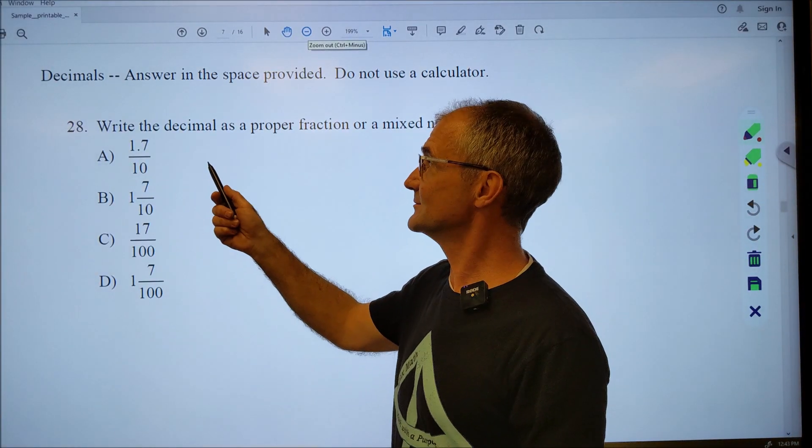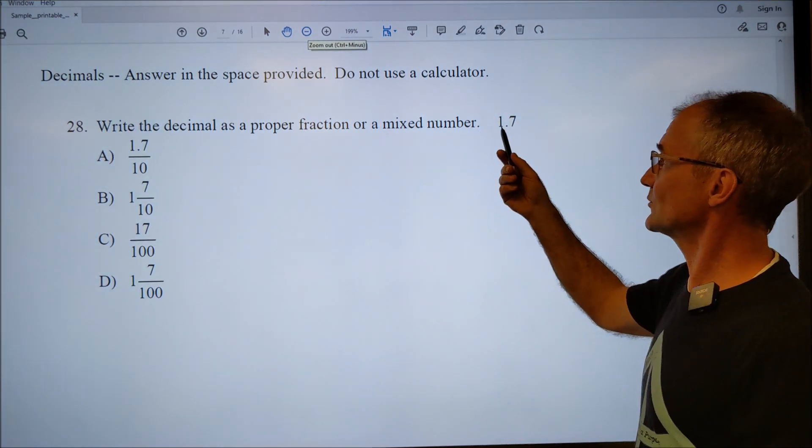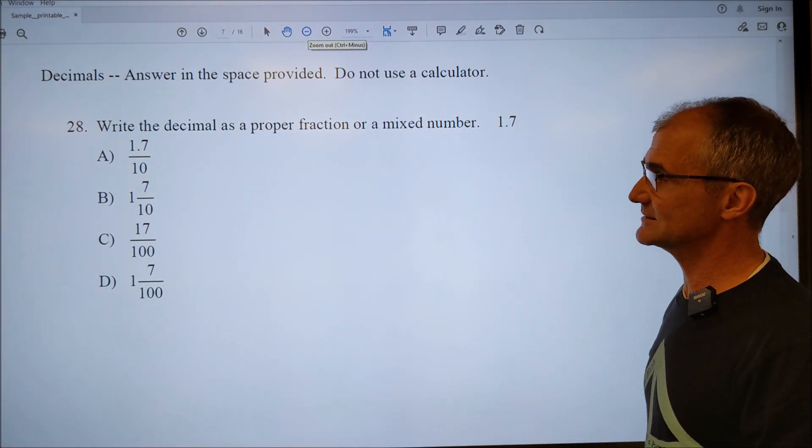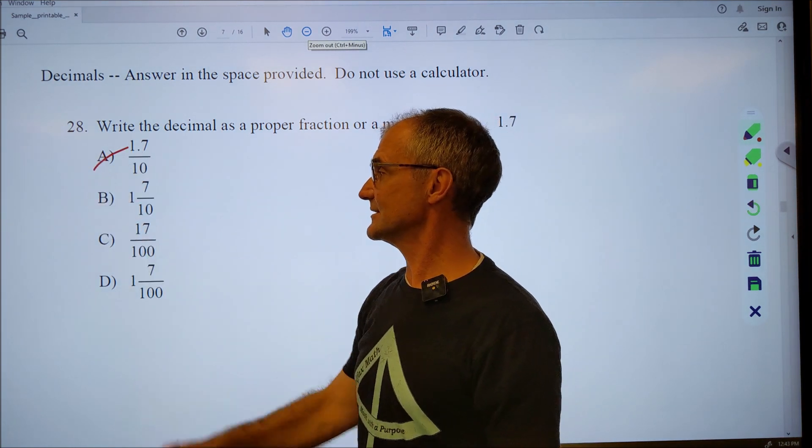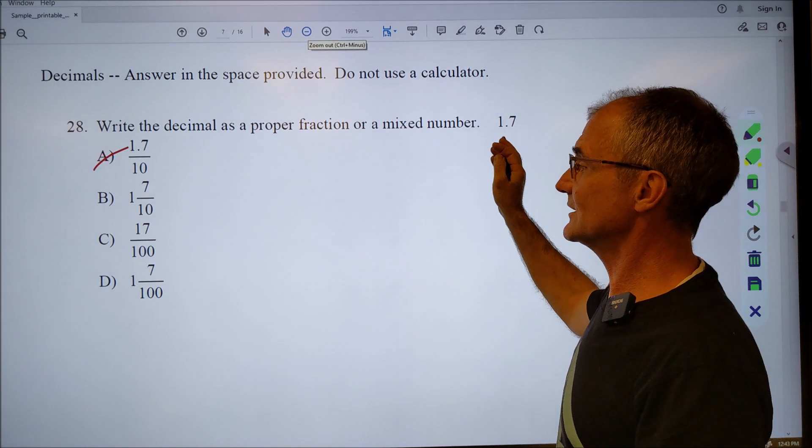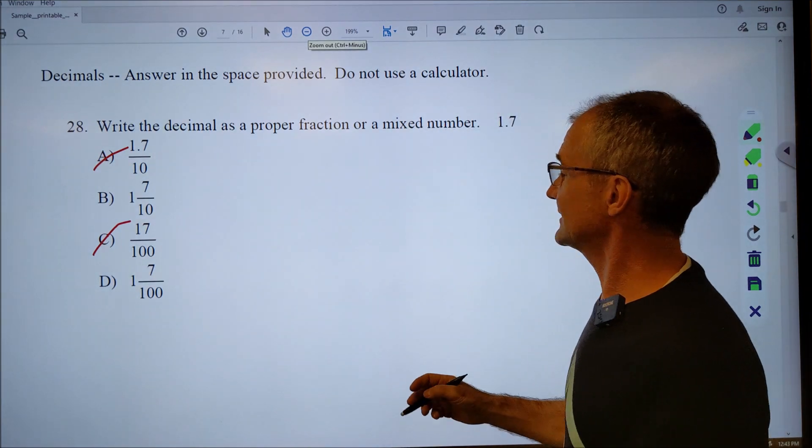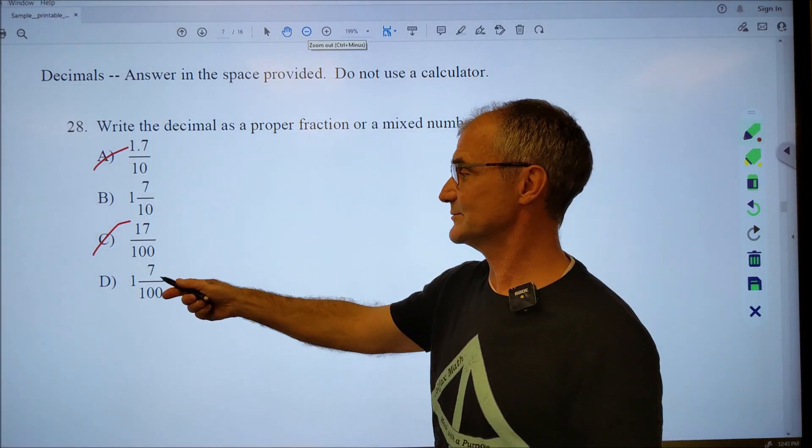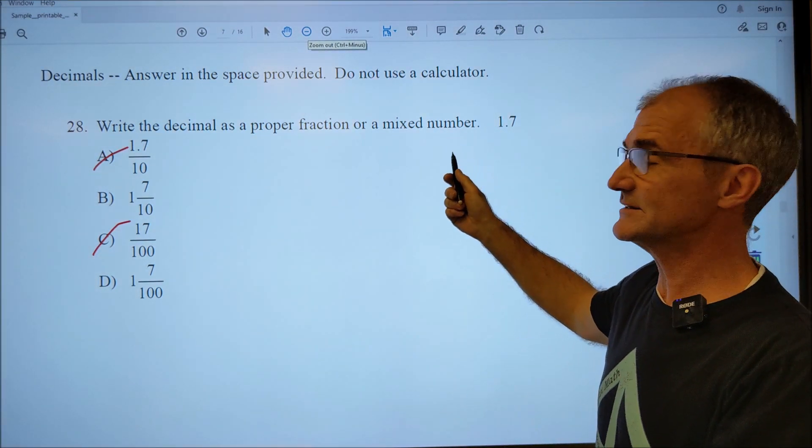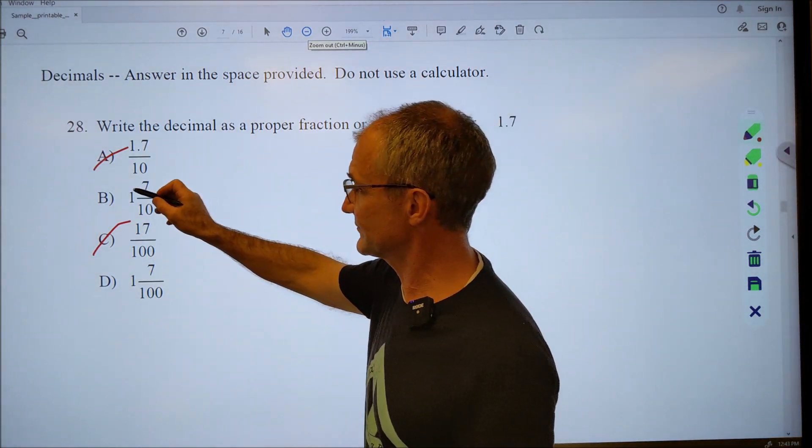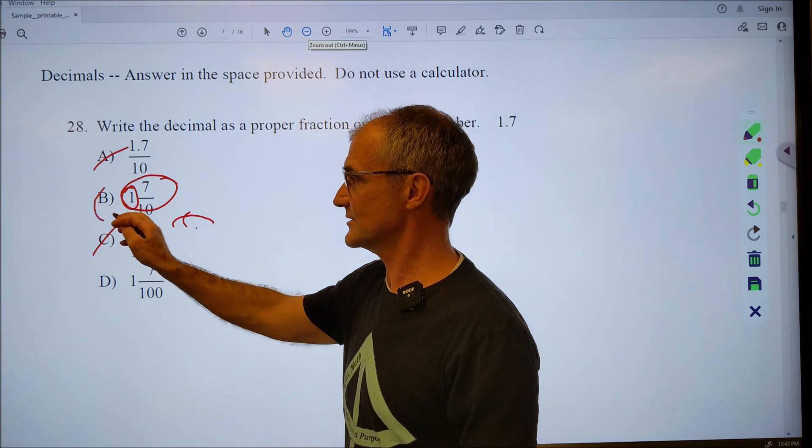All right, moving right along to decimals. Answer in the space provided. Do not use a calculator. So take this decimal right here, one point seven, and convert it into a fraction. No matter what, this doesn't make sense. You don't have a decimal inside of a fraction. That's not going to be it. And I know this is greater than one. So that can't be it either because that's less than one. So now I only have two things to choose from. So if I had to guess, I'd be a much better guess between B and D. But I could just figure that out. That point seven is saying seven tenths. So that one is this one in the front. That point seven is seven tenths or this portion right here. So answer B.